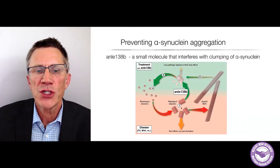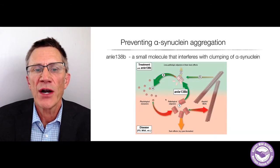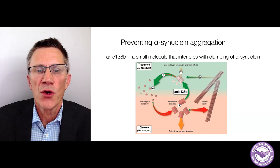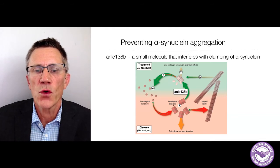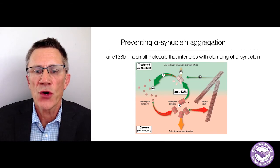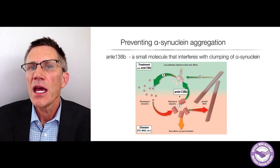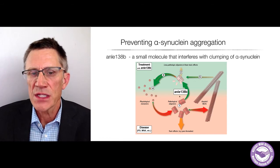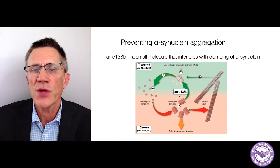ANLI-138B can interfere with this process. A study published last year from an Austrian group showed that giving ANLI-138B to mice with a model of multiple system atrophy can inhibit the cell death that occurs in the substantia nigra.